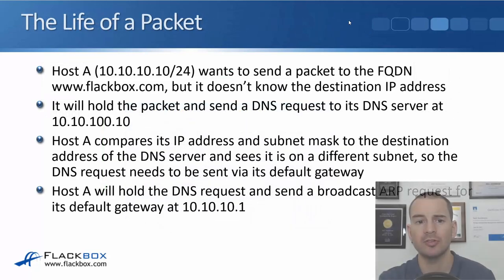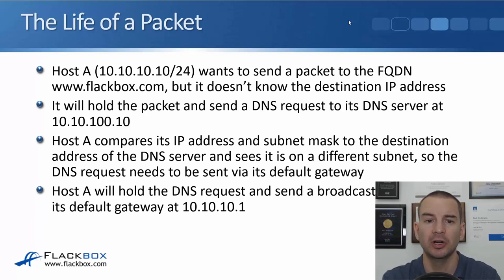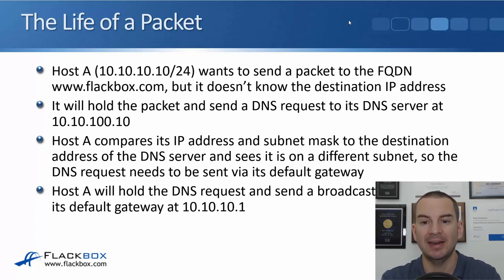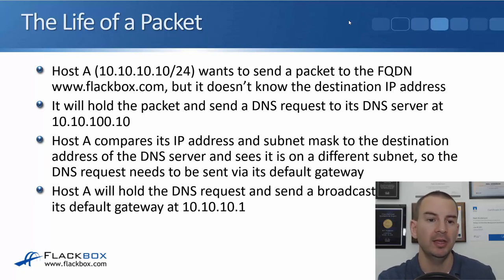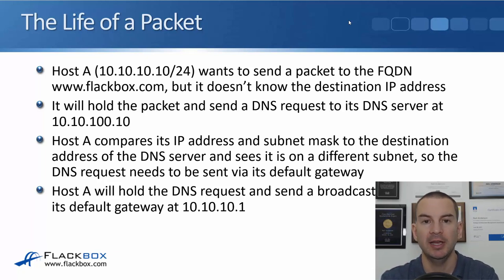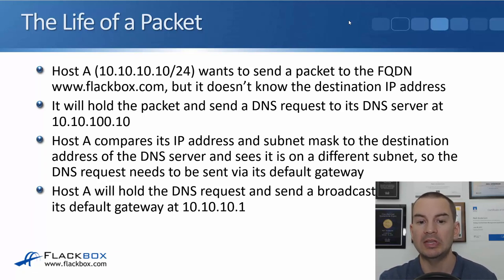Host A at 10.10.10.10/24 wants to send a packet to the FQDN www.flackbox.com but doesn't know the destination IP address. It will hold that packet and send a DNS request to its DNS server at 10.10.100.10. Host A already knows its IP address, subnet mask, default gateway, and DNS server. It compares its IP address and subnet mask to the DNS server's address, sees it's on a different IP subnet, so the DNS request must be sent via its default gateway.